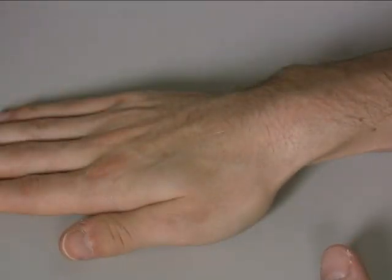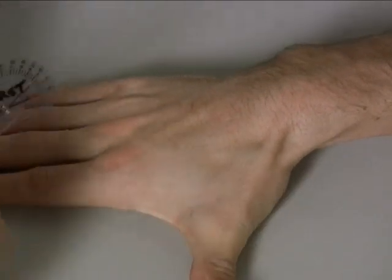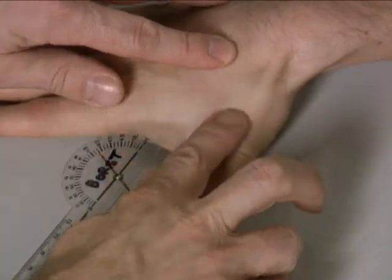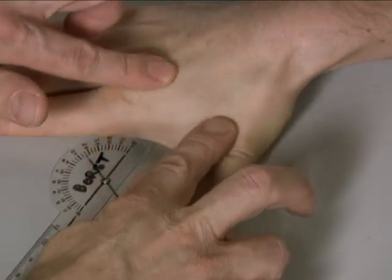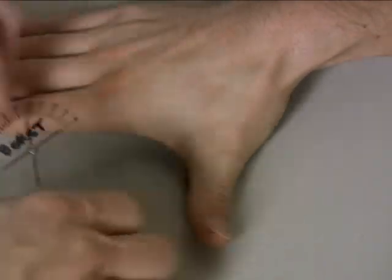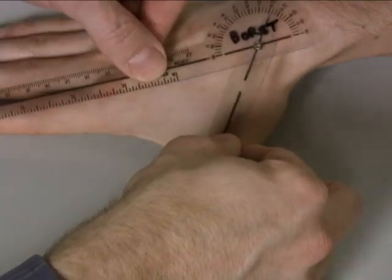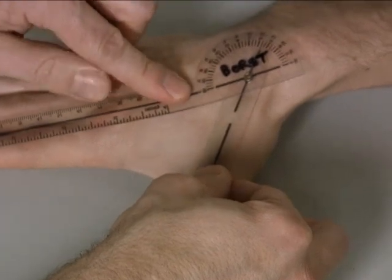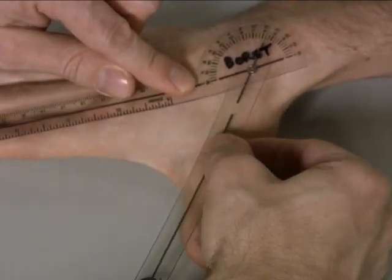Can I have you bring your thumb all the way out to the side, far as it'll go? For ending position, for thumb CMC joint radial abduction, again, palpate the index and thumb metacarpal joints, and simply place the stationary arm over the index metacarpal, the moving arm over the thumb metacarpal.